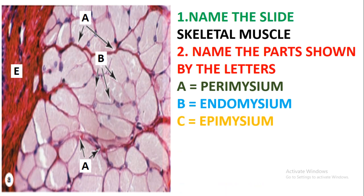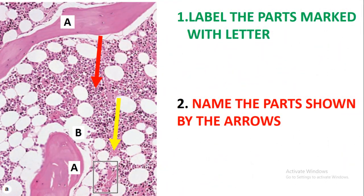Let's move on and look at the next slide. Label the parts marked with the letters. The part marked with letter A is showing the trabeculae, and B is showing the adipose tissue.